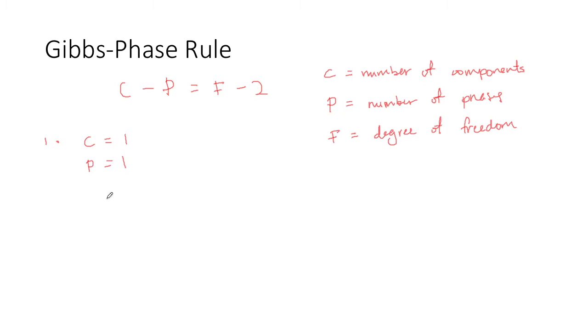And thus F would be, using the equation here, 1 minus 1 equals F minus 2, which results in F equals 2, which means that you will need to fix two properties to make the system constant. In this case, the two properties can be temperature and pressure.